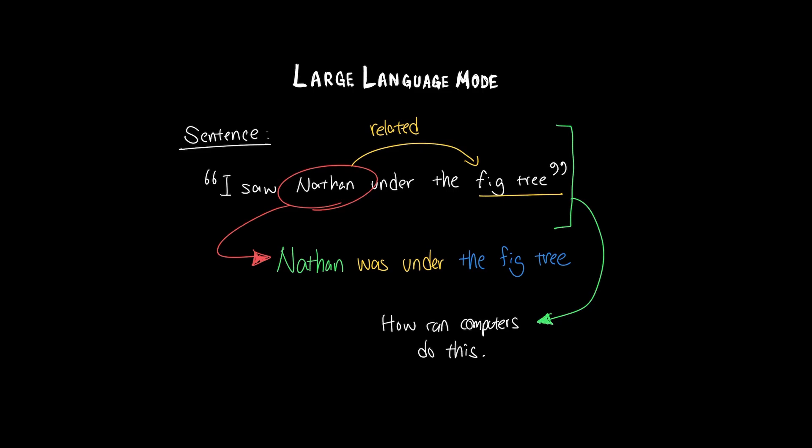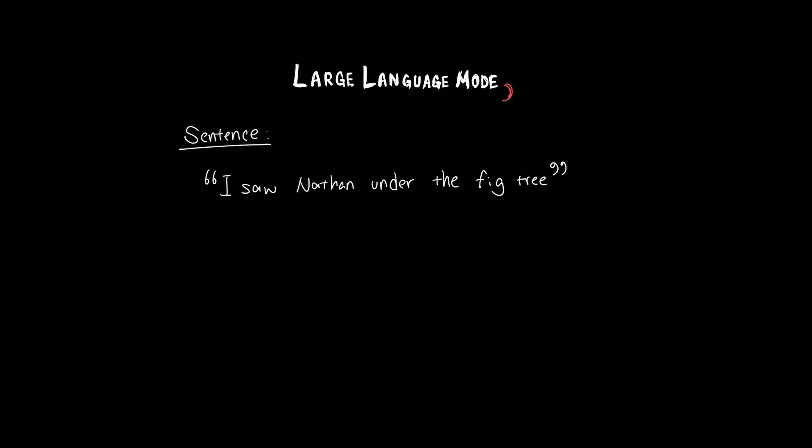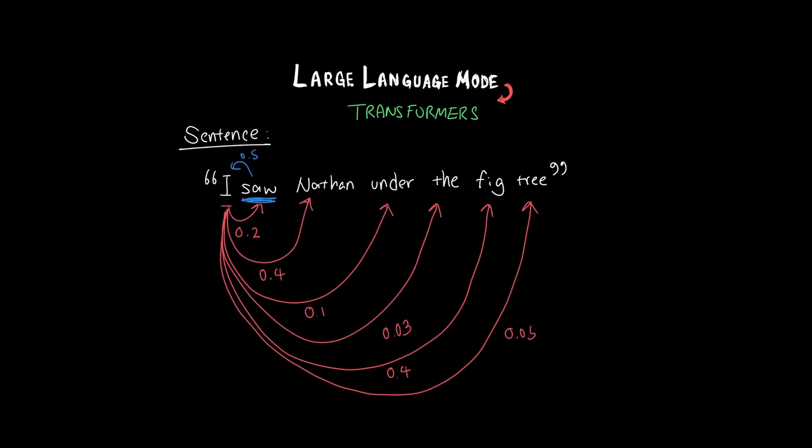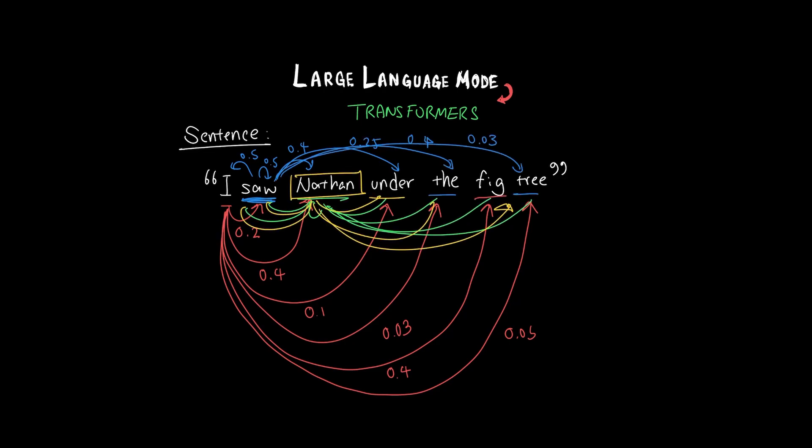But how do we exactly relay this skill to a computer? Transformers attempt this by computing scores on how one word relates to every other word in a given sentence. That way, no matter what word we look at, we can still augment the meaning of that sentence by looking at the context that it was used in.